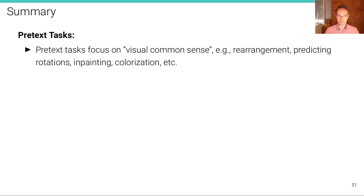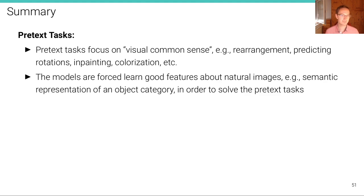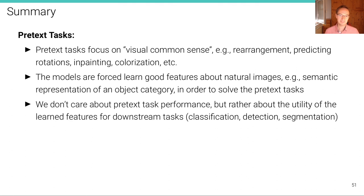To summarize the pretext task unit: pretext tasks focus on visual common sense — for example, rearrangement, prediction of rotations, inpainting, colorization, etc. Models are forced to learn good features about natural images, such as semantic object-part structure, in order to solve the pretext tasks. We do not care about pretext task performance itself, but about the utility of the learned feature representations for the downstream tasks we actually care about, such as image classification, object detection, semantic segmentation, depth estimation, and normal prediction.